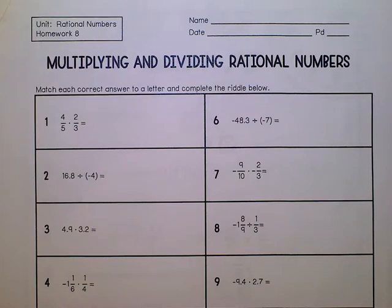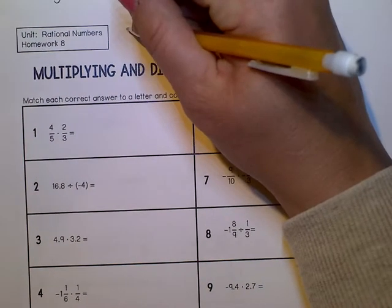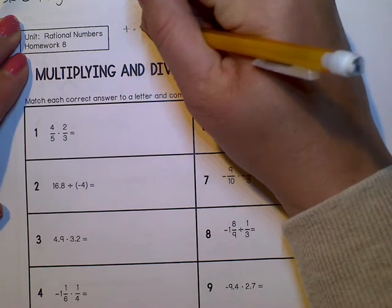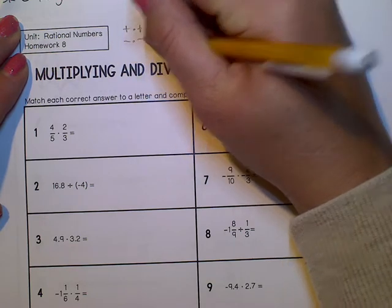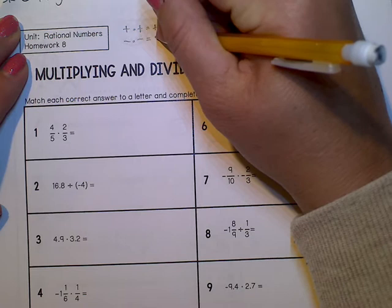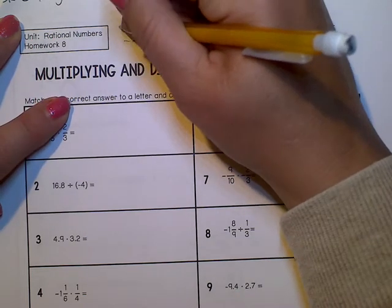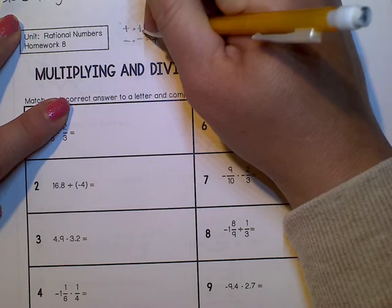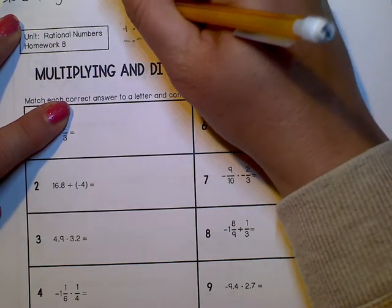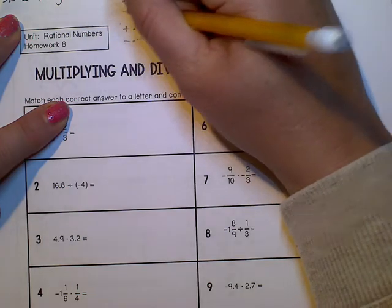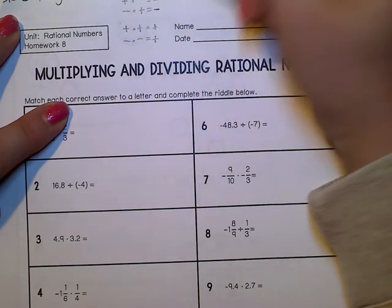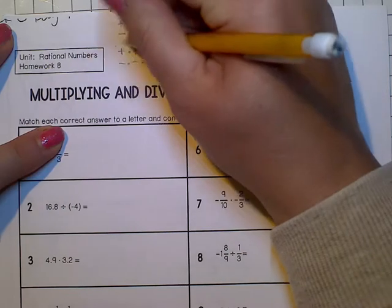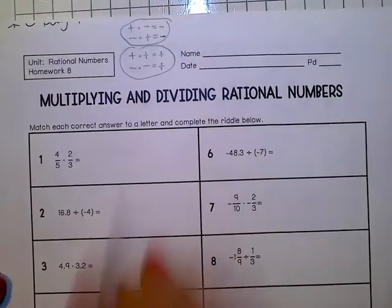We're working on multiplying and dividing rational numbers, and this pretty much just reminds you of the rules. A positive times a positive equals a positive, a negative times a negative equals a positive. If there are two numbers that are the same sign, they're going to end up being positive. If you have a positive times a negative or a negative times a positive, your answer will always be negative.